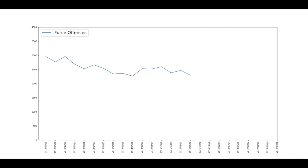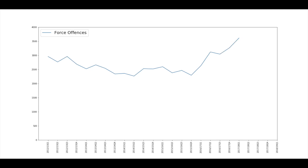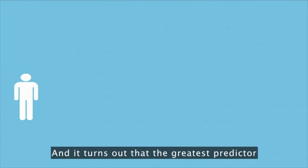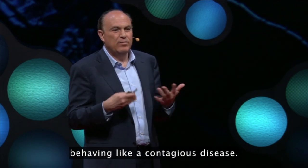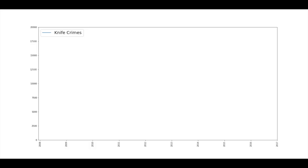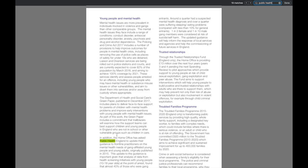To summarise, the data has shown us there has been an increase in knife crime in London. We've also heard about the idea of violence behaving like a disease, and seen the effects that treating it like one can have. Finally, we've seen that London has started implementing similar ideas, which I'm hopeful will have positive effects. I hope you enjoyed watching and feel inspired to do some of your own investigating — and if you do, let me know what you find.